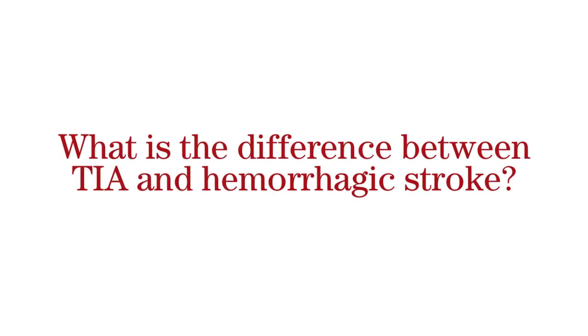What is the difference between a transient ischemic attack and a hemorrhagic stroke? A transient ischemic attack is a mini stroke. A patient will present with weakness, difficult speech, some neurologic deficit, which typically reverses within 24 hours.